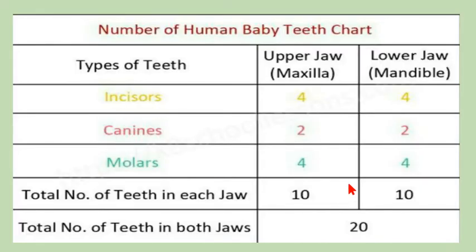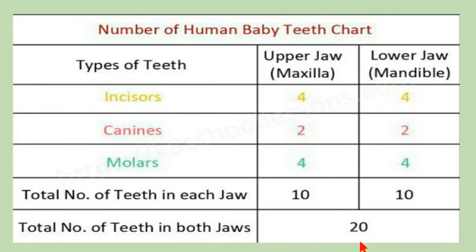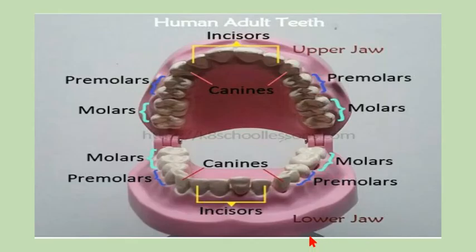Incisors in the maxilla and mandible are four in number each, containing four teeth total per jaw. Canines are two in number — two in the upper jaw and two in the lower jaw. Molars are also four in number — four in the upper jaw and four in the lower jaw. This gives 10 teeth in the upper jaw and 10 in the lower jaw, totaling 20.